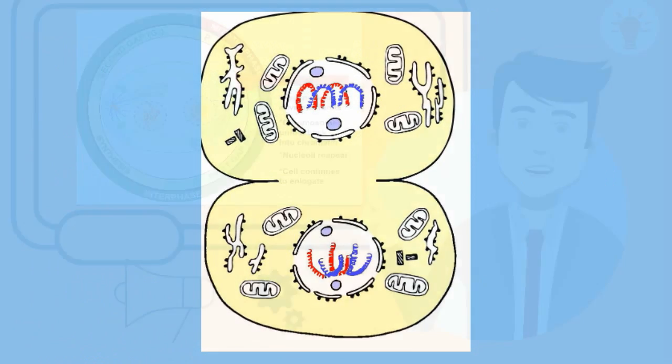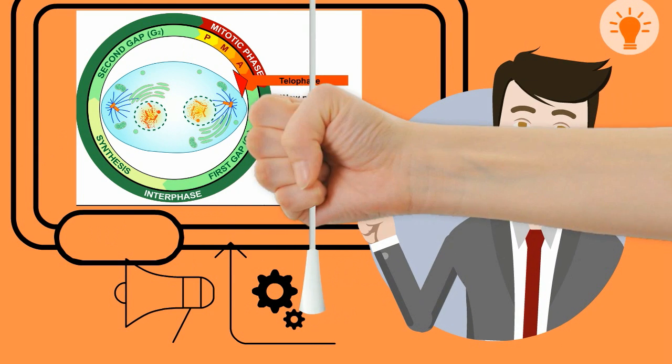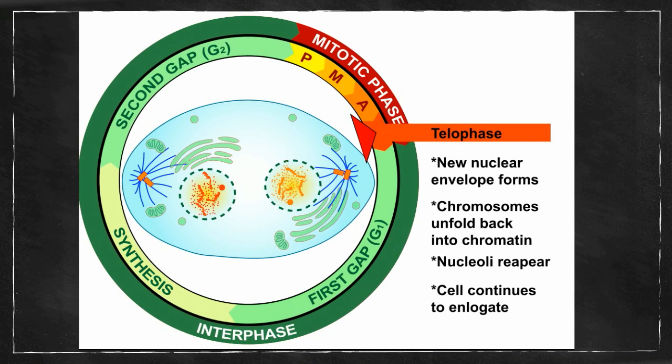A couple important things begin to occur during telophase. First, the chromosomes that first began to appear during prophase now begin to retract and dissolve.